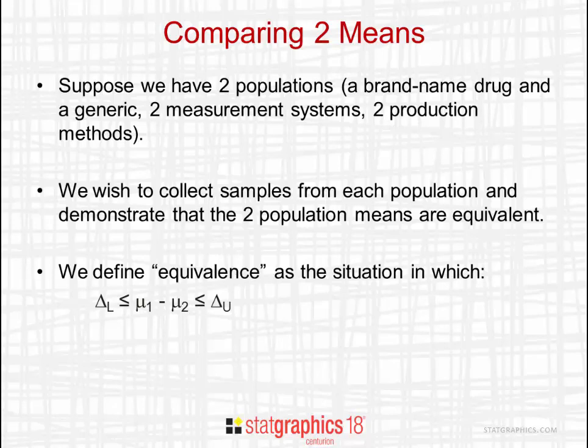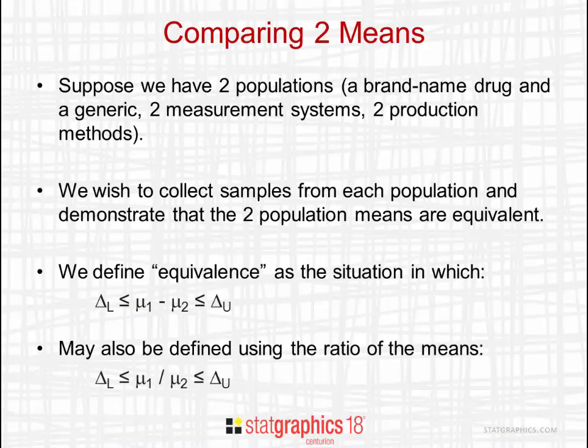Equivalence can be defined using the difference between the means, where delta L might be minus 5 and delta U might be plus 5. Equivalence can also be defined using the ratio of the means — for example, looking at the ratio of mean 1 divided by mean 2, where delta L might be 80% and delta U might be 125%.